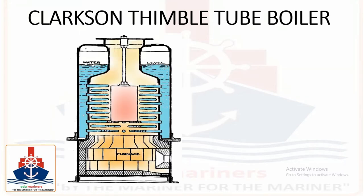The basic form of the boiler consists of an outer shell enclosing a cylindrical furnace, surmounted by a combustion chamber into which the thimble tubes are projected. These thimble tubes, which you can see here, are expanded and bell-mouthed into a cylindrical tube plate forming the combustion chamber.